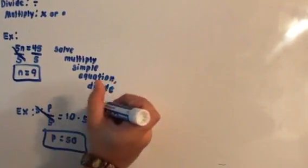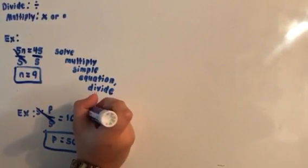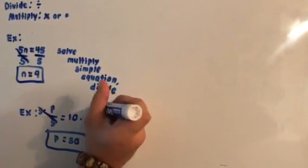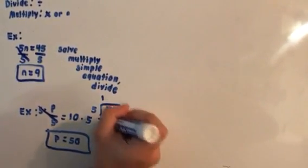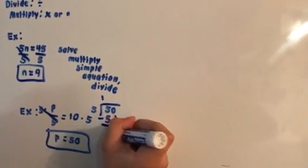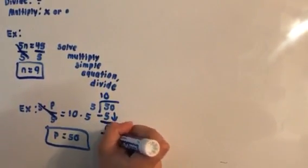And to check that, you do 50 divided by 5, and then 5 goes into 5 one time, that'll be 0, and then 5 goes into 0, 0 times, that'll be 0.